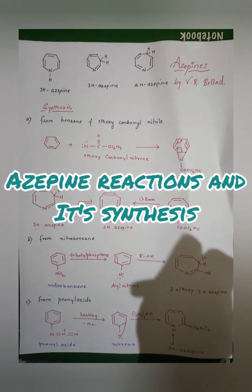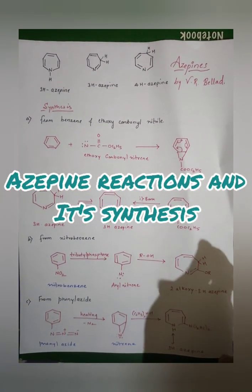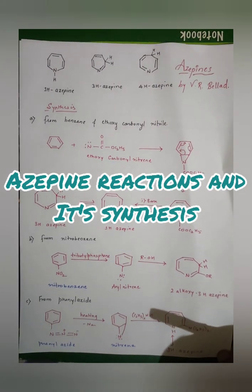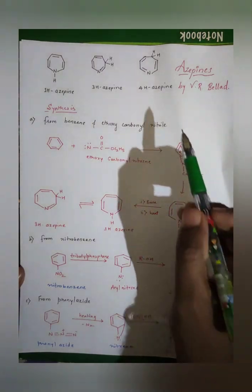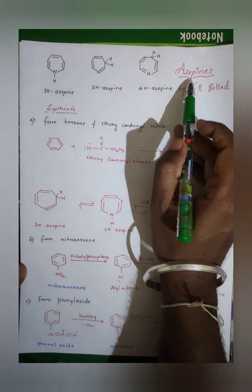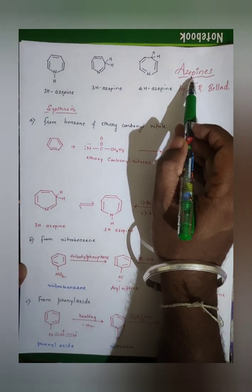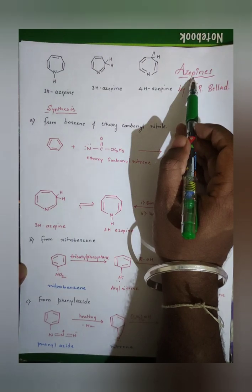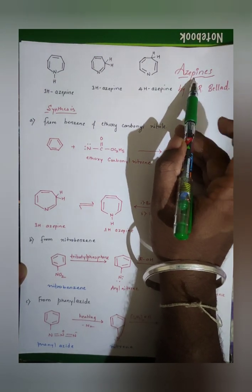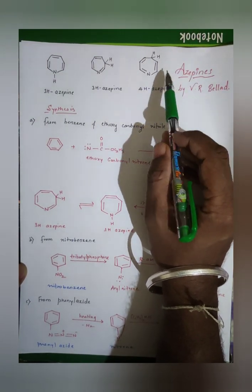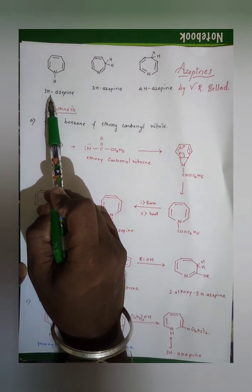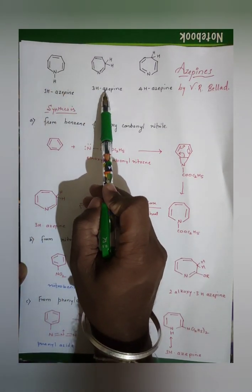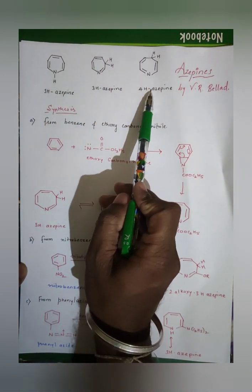Welcome to Win Chemistry. Today we are going to discuss one more heterocyclic compound known as azepine. Azepines are seven-membered heterocyclic compounds containing nitrogen as a heteroatom. I have written three azepines: 1H-azepine, 2H-azepine, 3H-azepine, and 4H-azepine.